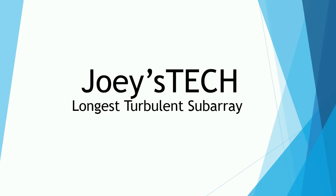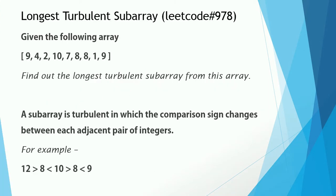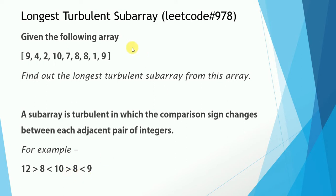Now without further delay, let me explain the problem statement. You have an integer array out of which you need to find the longest turbulent subarray. A turbulent subarray is a subarray in which the comparison sign turns opposite between each contiguous pair of integers in the subarray. Out of the array given, we have to find the longest such subarray that is turbulent in nature.